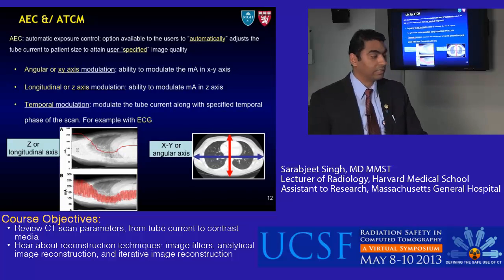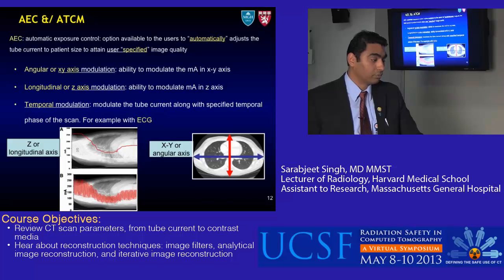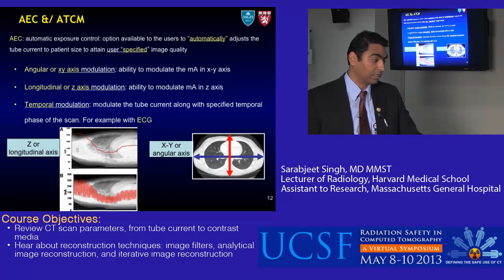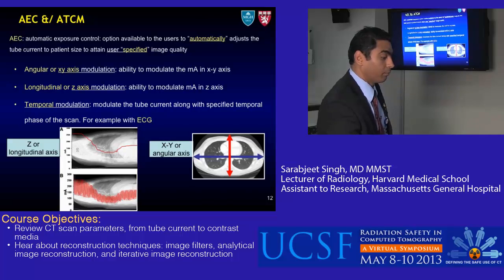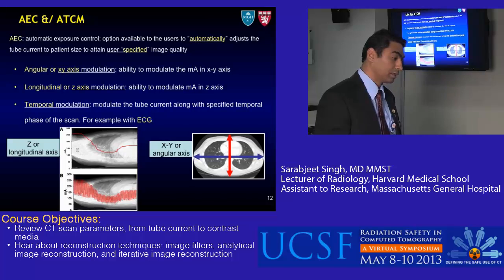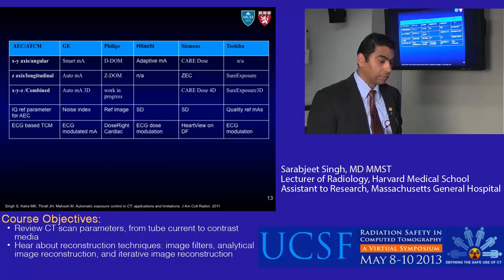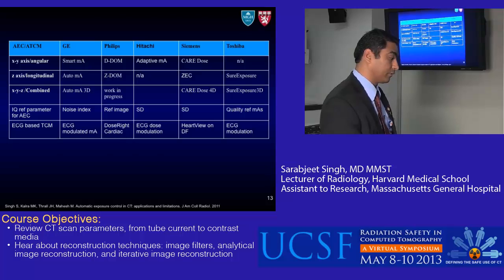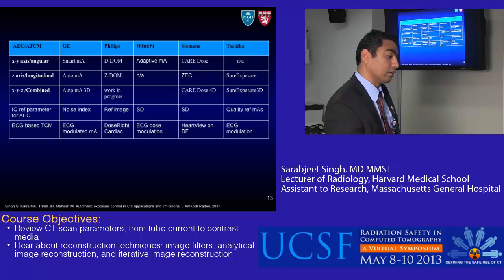Next is AEC, or ATCM — automatic exposure control or automatic tube current modulation. This is an option available to users to automatically adjust the tube current to patient size to attain a user-specified image quality. There are different types of ATCM: angular or XY modulation, which modulates mA in the XY direction; longitudinal or Z-axis modulation along the patient's z-axis; and temporal modulation where mA is modulated based on the phase of the scan, such as cardiac-based modulation via ECG. Plotting these parameters shows a lookup table comparing modulation types across vendors — for example, auto mA from GE is a longitudinal modulation, whereas Care Dose from Siemens is XY modulation.